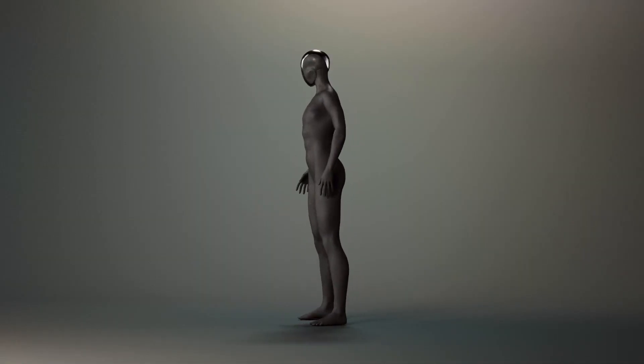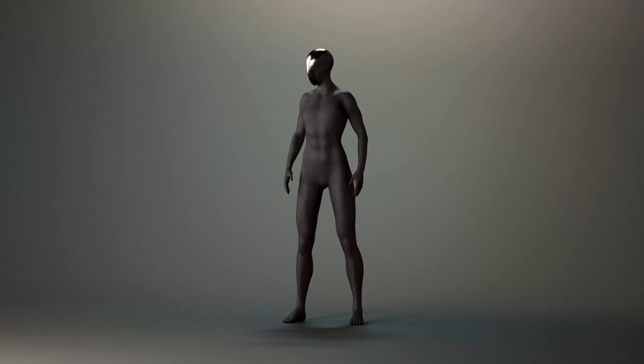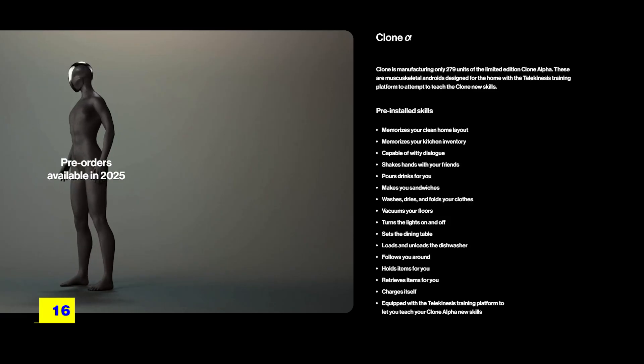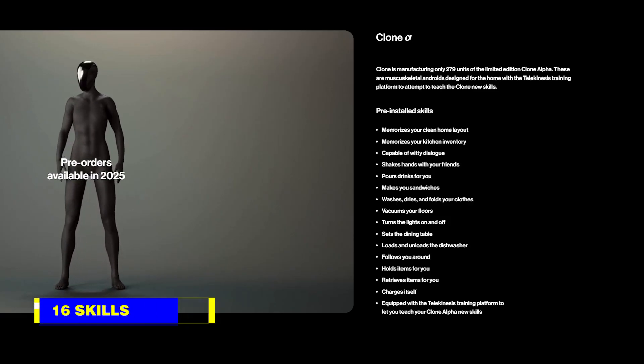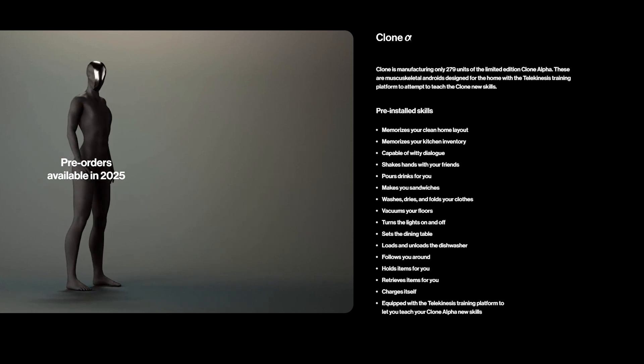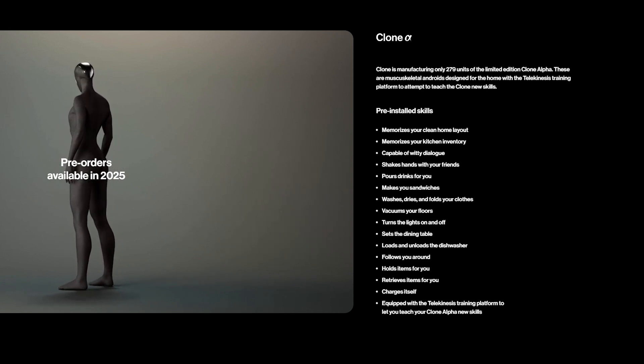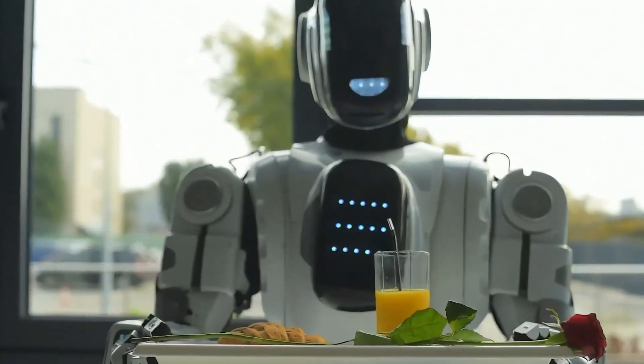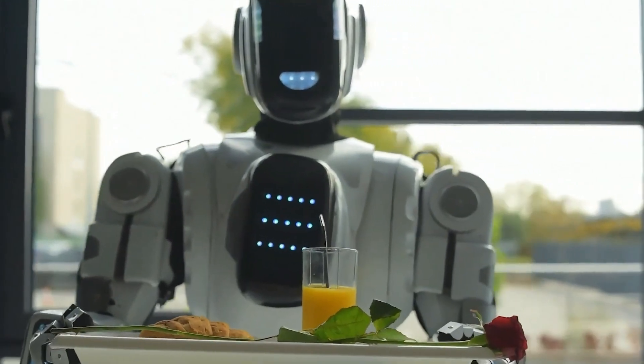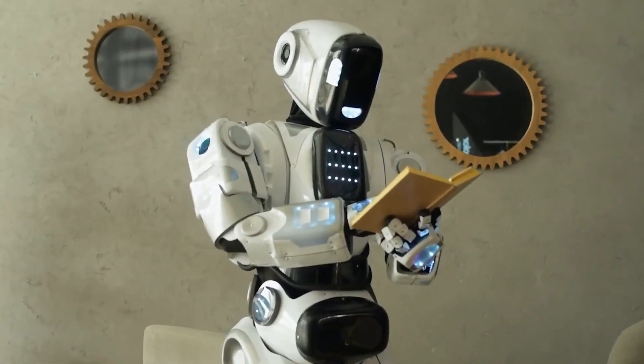The company claims Clone Alpha can perform a variety of tasks straight out of the box. It comes preloaded with 16 skills, such as memorizing the layout of a home, tracking kitchen inventory, and performing household chores like vacuuming, setting the dining table, and folding clothes. It can even pour drinks and make sandwiches, which is a nice touch for anyone dreaming of a robotic assistant.